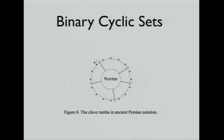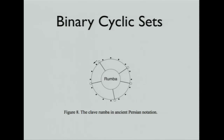My personal favorite is the binary cyclic set. It's a notation that we first found in ancient Persia. Basically, how it works is it's binary — meaning you either have a hit or you don't have a hit. And it's cyclic, meaning it's a circle. If you look at the little white circles with lines going towards the middle: if there's a white circle, you clap; if there's not a white circle, you don't clap. This one in particular is the rumba.